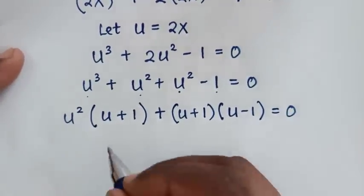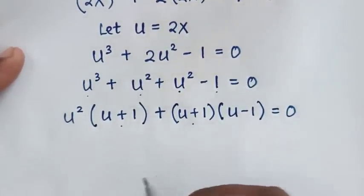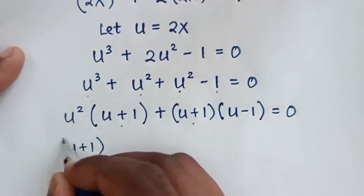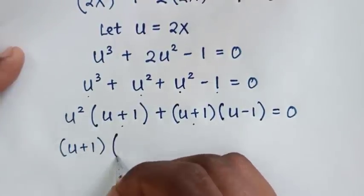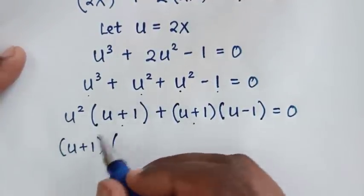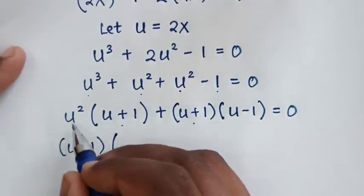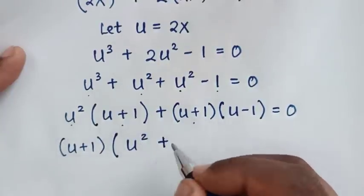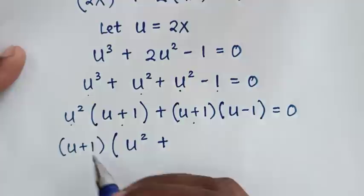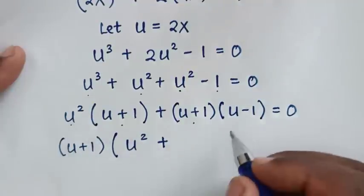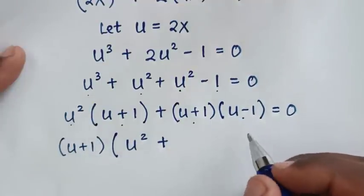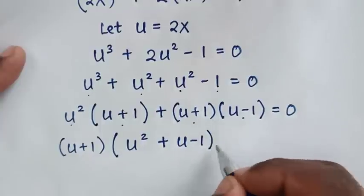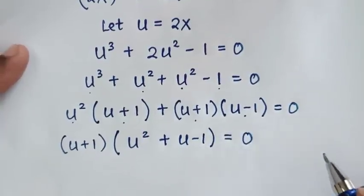Now (u + 1) is common, so we factor it out: (u + 1)(u² + u - 1) = 0.